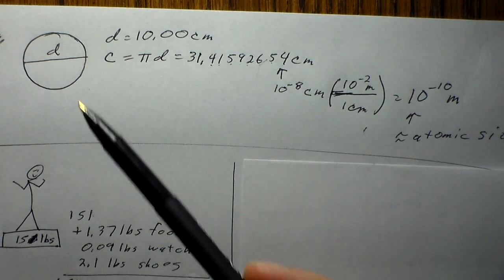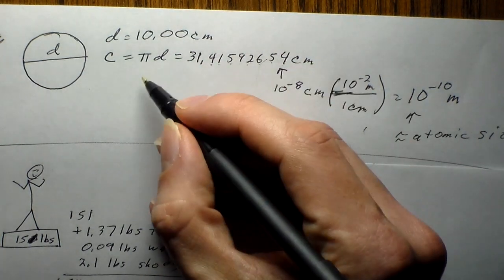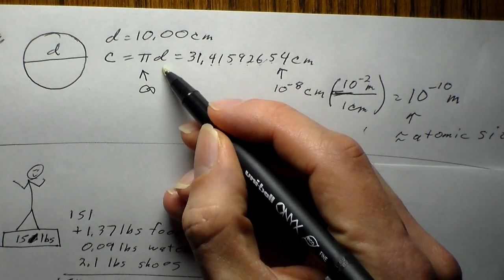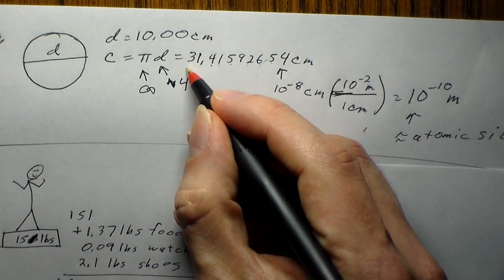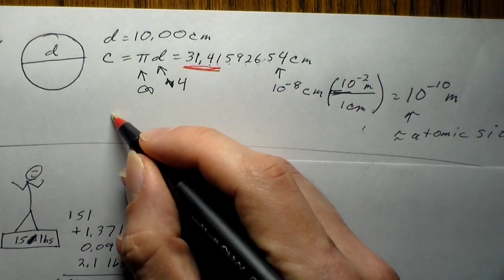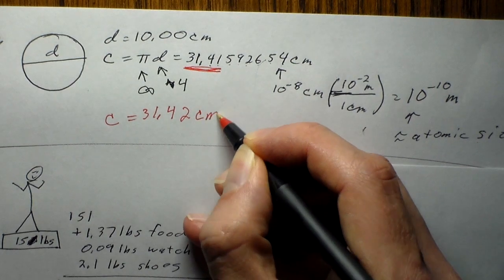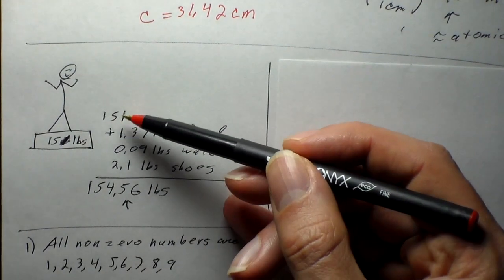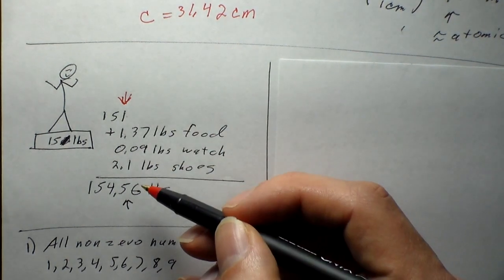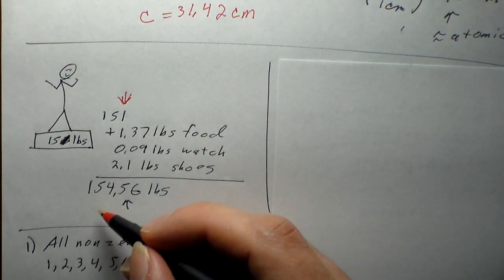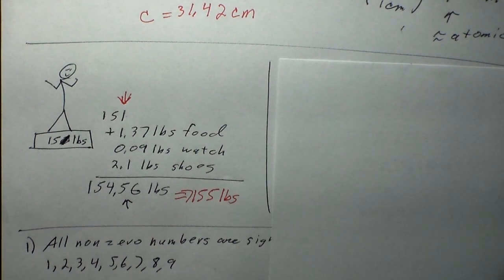Coming back to the original examples: for the circle, the diameter was measured to four sig figs, and pi has infinite sig figs, so the circumference is 31.42 centimeters (four sig figs). For the weight problem, the least significant digit is in the ones place, so the answer rounds to 155 pounds.